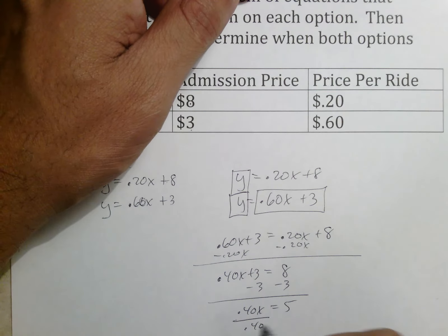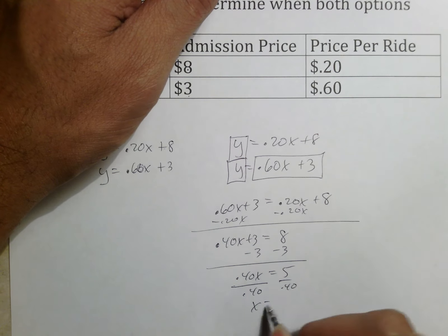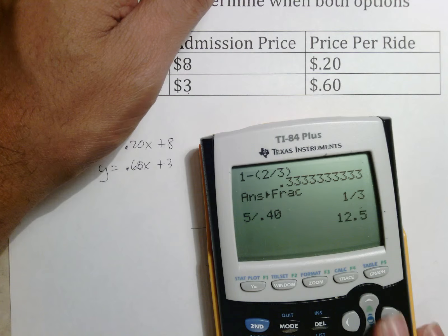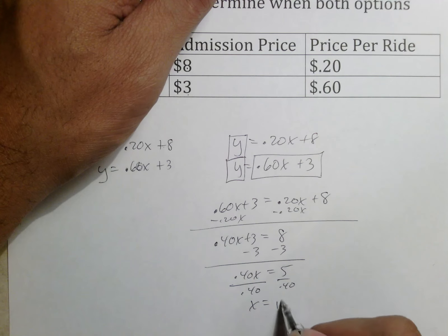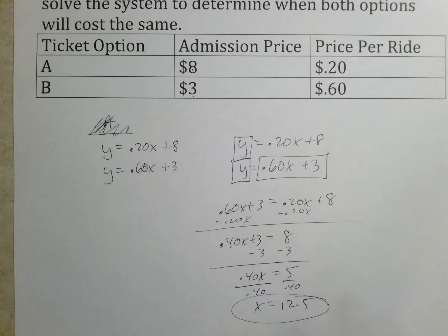You then subtract 3, getting 0.40x equals 5, and then divide by 0.40 to wrap this up. 5 divided by 0.40, which is 12.5.